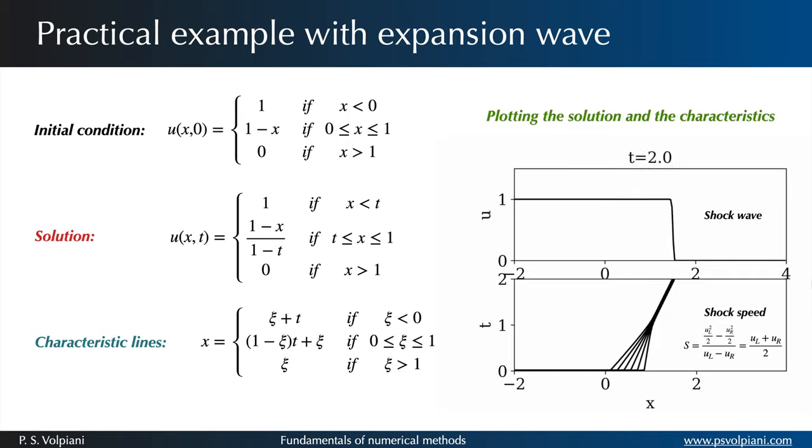The velocity of the shock respects the Rankine-Hugoniot relation. In this formula, UL and UR are the velocities on either side of the shock.